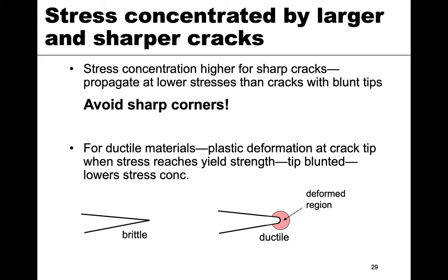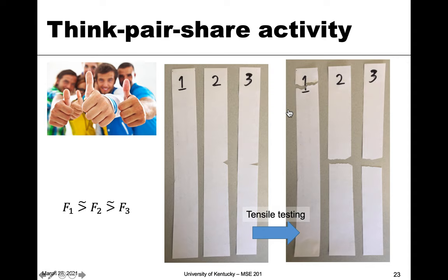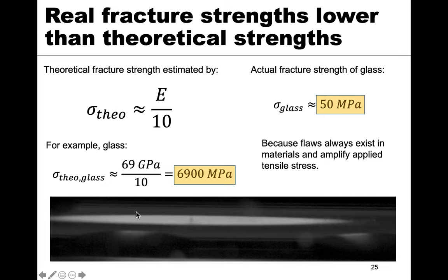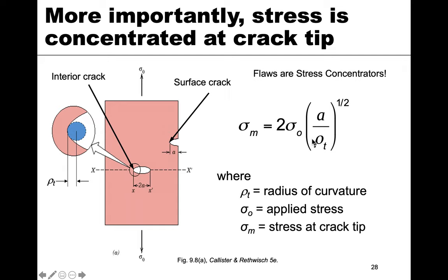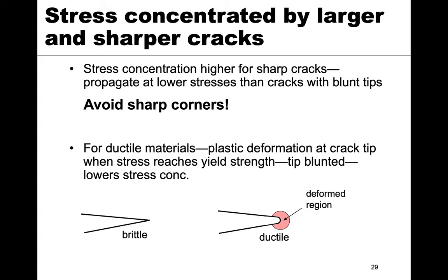Stress is concentrated more with larger cracks and also with sharper cracks. In brittle materials, cracks remain sharp; in ductile materials, plastic deformation can blunt the crack tip, increasing the radius of curvature. Going back to the previous demo, that was the difference between sample 2 and 3 — same crack depth but different sharpness, so stress was concentrated much more in the sharper one, requiring less force to break it.